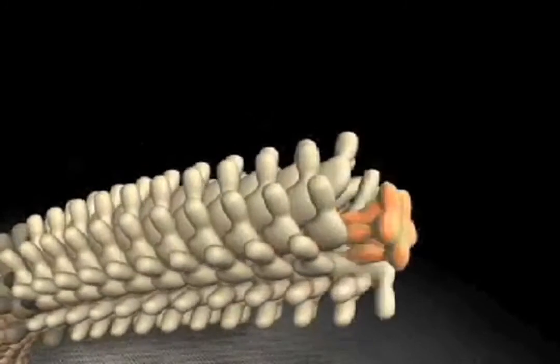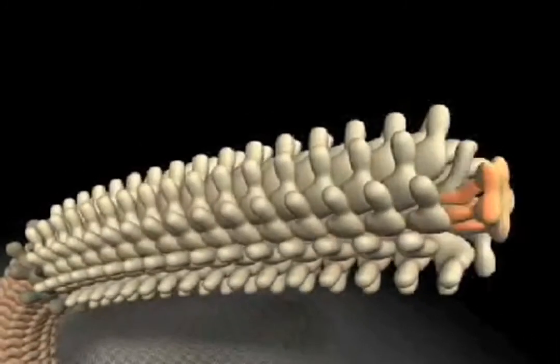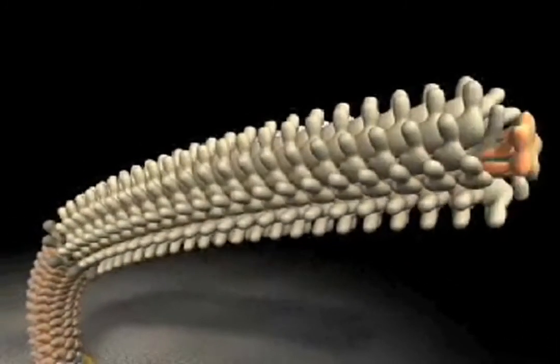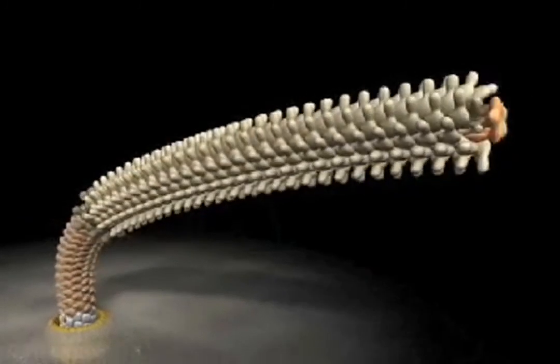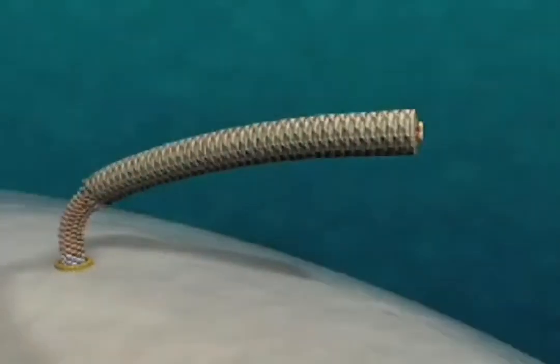The cap rotates, which causes the subunits to build in a helical fashion. A complete filament can consist of 20,000 to 30,000 subunits.